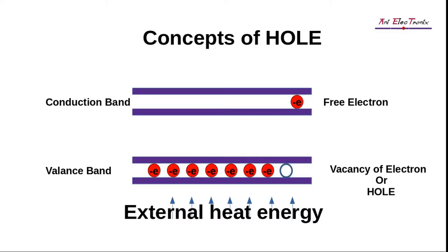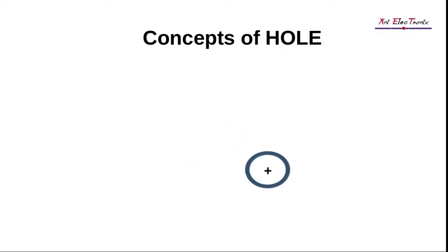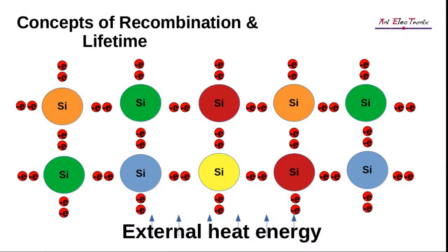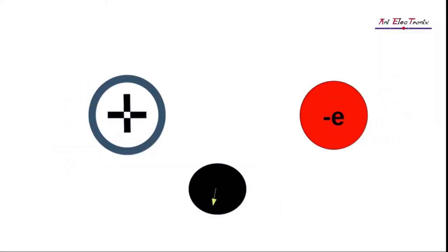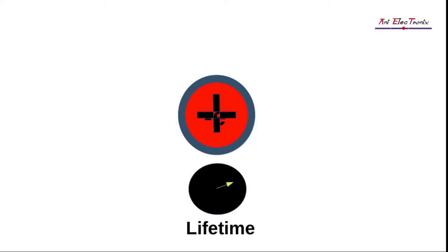So far, we've learned what a hole is and that its charge is positive. Because the charges of electrons and holes are diametrically opposed, a free electron will attract and combine with a hole. Recombination is the term for this phenomenon. The time between the formation and disappearance of a free electron is called lifetime.